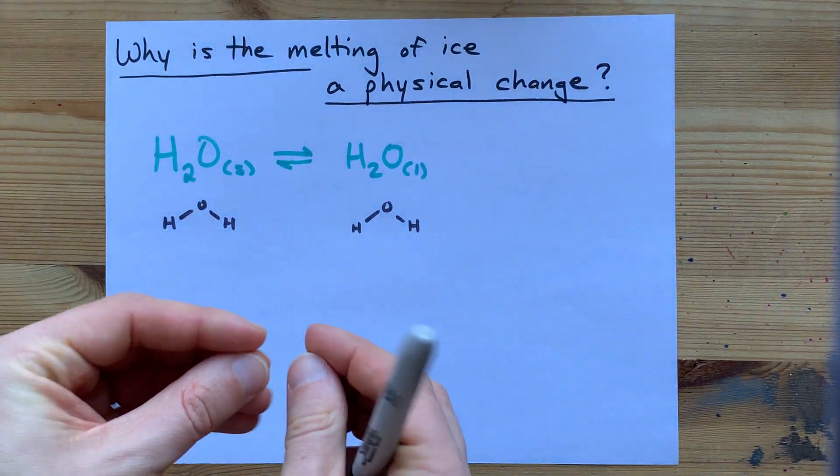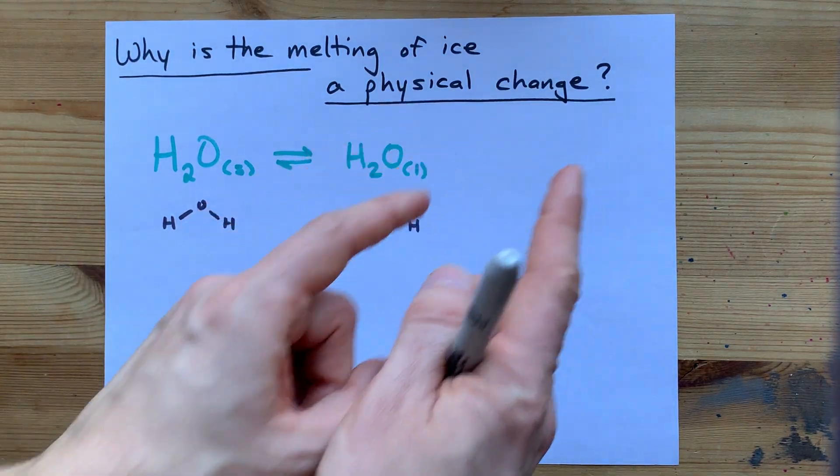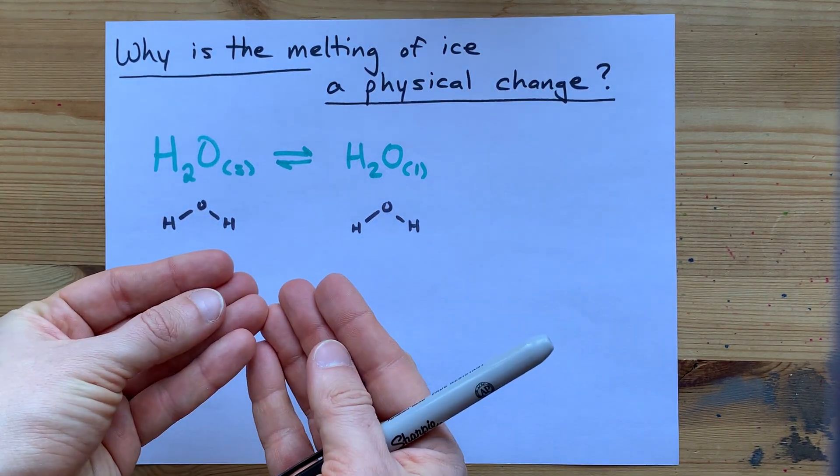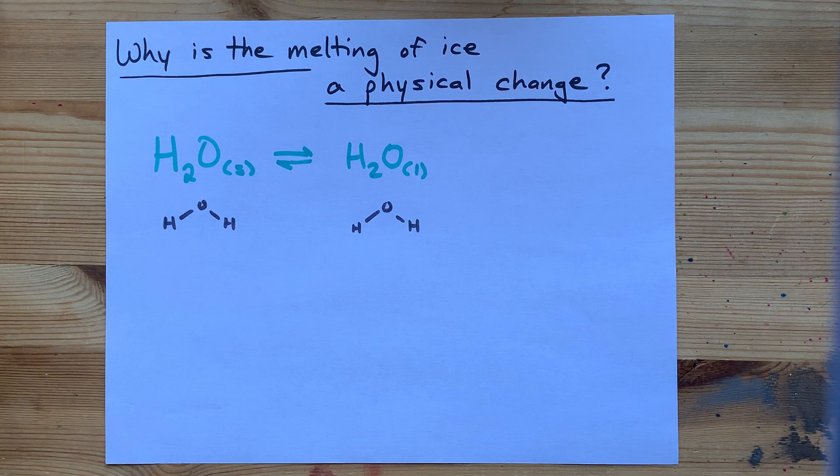Chemical changes are ones where bonds are broken and formed. Physical changes are ones where these bonds stay intact, and something else has changed instead.